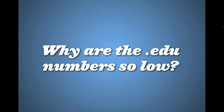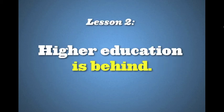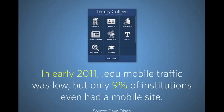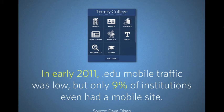My theory: if you don't have mobile solutions deployed, people quickly learn not to visit your site on a mobile device. In early 2011, dot-edu mobile traffic was low, but only 9% of institutions even had a mobile site. Think of a prospective student looking at 10 to 15 different sites during their investigative process — if only one in ten actually has a mobile site, they quickly learn not to visit college and university sites on mobile because they're not optimized for it.